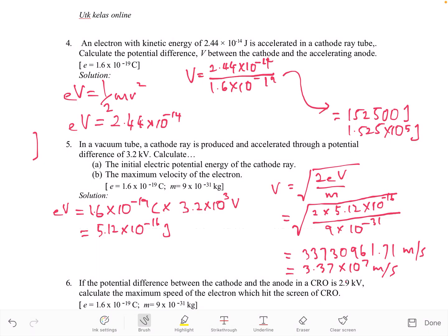In the next question, in the vacuum tube, a cathode ray is produced and accelerated through a potential difference of 3.2 kilovolt. Calculate the initial electric potential energy of the cathode ray. From here, we can directly use formula eV because the question is about initial electric potential energy.